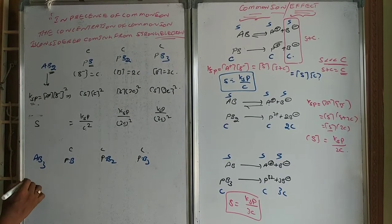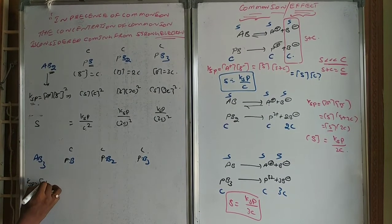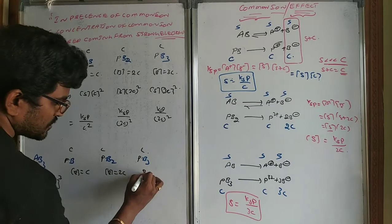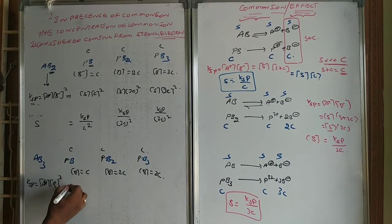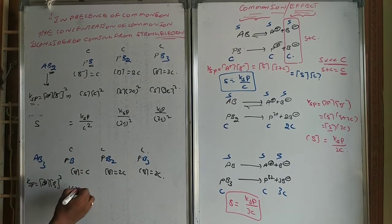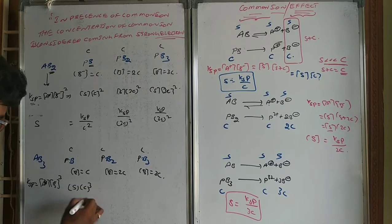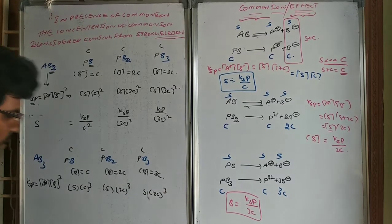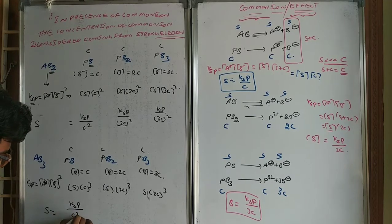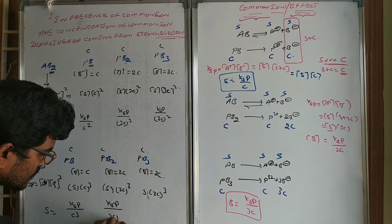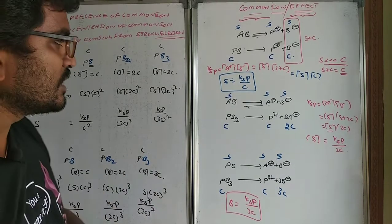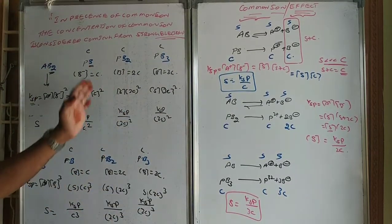For AB3 salt, Ksp = [A⁺][B⁻]³. With concentration of B⁻ being C, 2C, or 3C, the solubility expressions become S = Ksp / C³, S = Ksp / (2C)², or S = Ksp / (3C)² accordingly. Like this, you can identify the solubility of a particular compound in presence of a common ion.